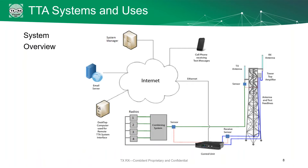Here we've got a diagram showing all the different components. We have our receive antenna, which hands off the signal to a tower top amplifier — the box mounted on top of the tower. It comes down through the line to the control unit, which then divides it up and hands off all of your signals to your radios. Radios hand it back to the combining system and back out through the TX antenna. This control unit also has Ethernet links to it, meaning it can send you alerts through the internet to your desktop computer, email, or even your cell phone. You can monitor your equipment without ever being on site.